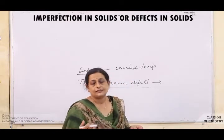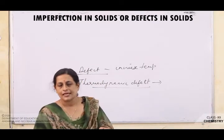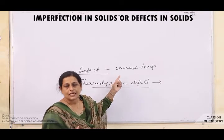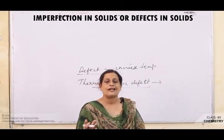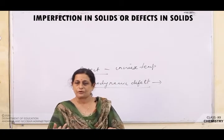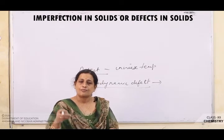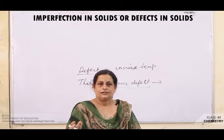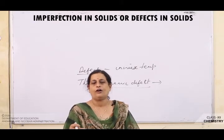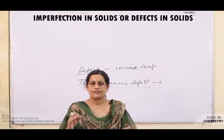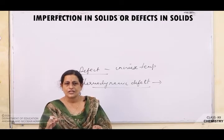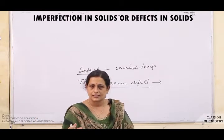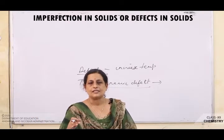This defect changes the properties of solids. We can explain the mechanical properties, electrical properties — all of these can be explained on the basis of defects in the crystal. Defects can also be produced by adding impurities: when a crystal is doped with impurities, that also produces a defect. This property is used for creating semiconductors. So defects arise due to increase in temperature or due to missing/misplaced constituent particles.